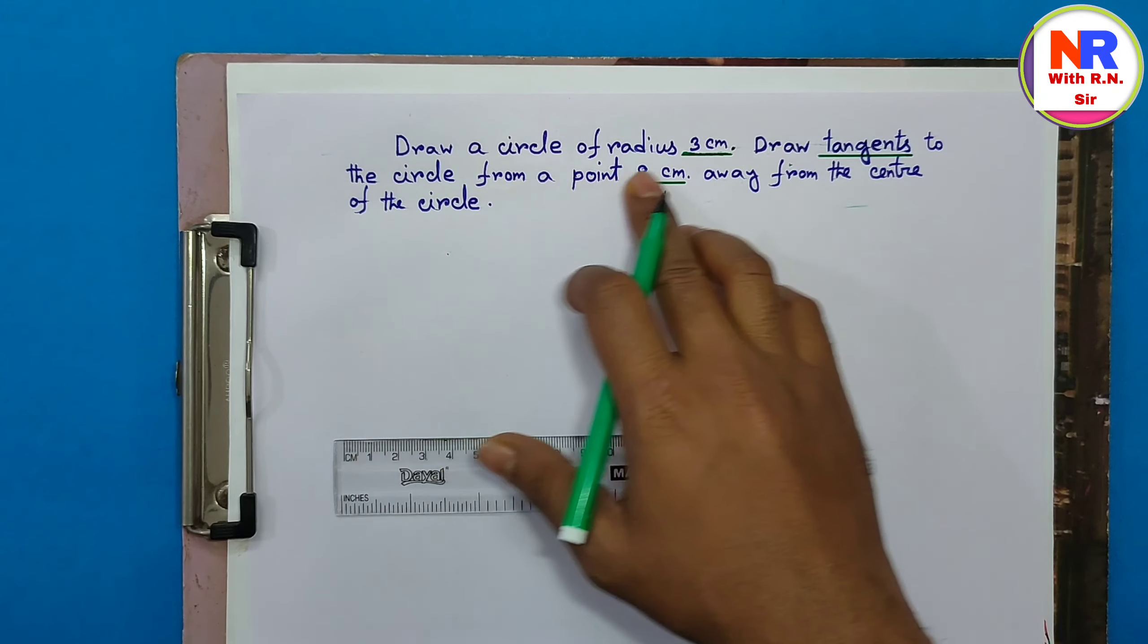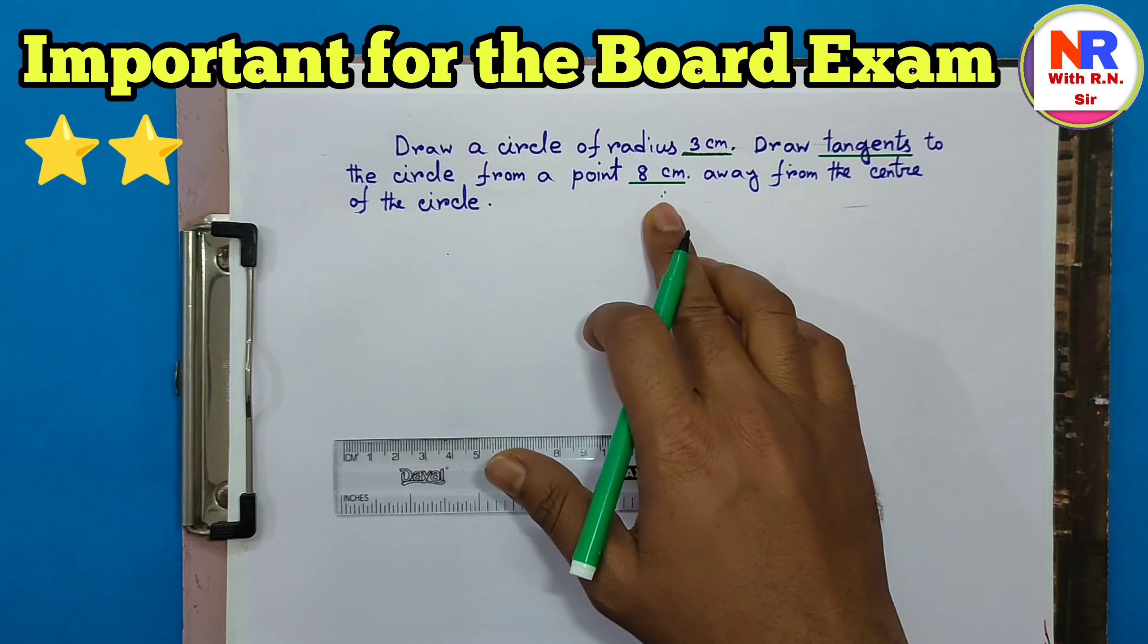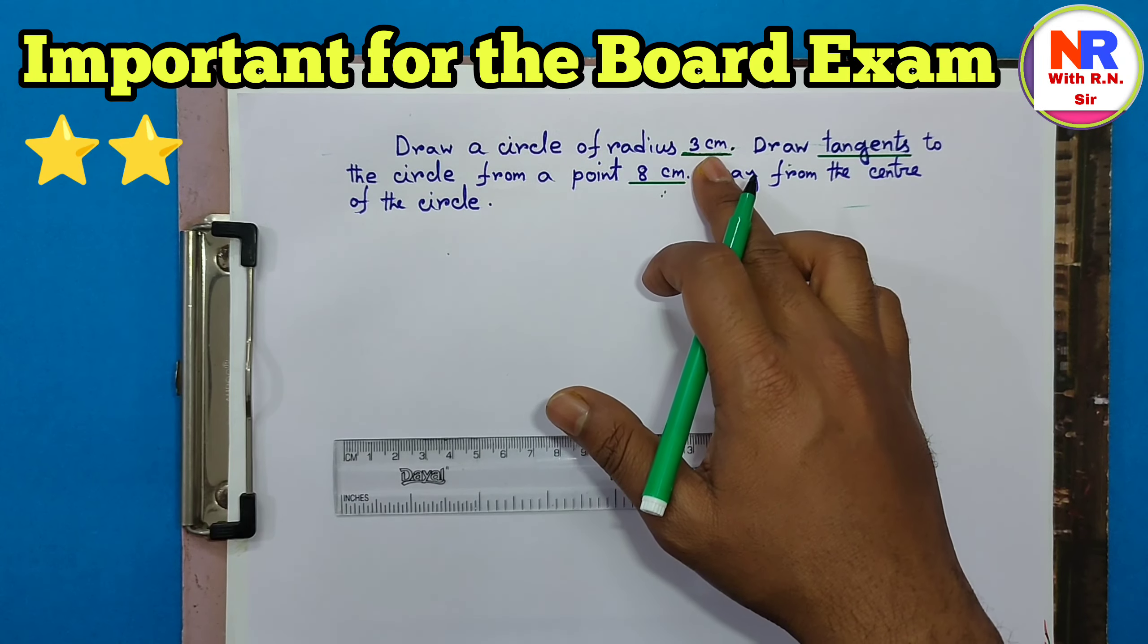The question is: draw a circle of radius 3 centimeters, draw tangents to the circle from a point 8 centimeters away from the center of the circle. At first we will draw 3 centimeters and 8 centimeters.